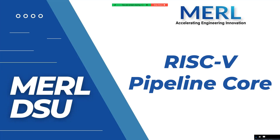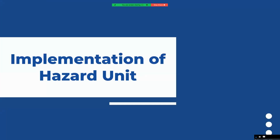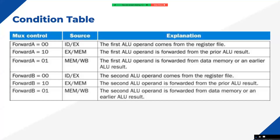Today we are going to design the first component of that forwarding logic, which is the hazard unit. The hazard unit is responsible for taking all decisions and generating the extra control signals required by the pipeline to execute operations correctly. Today's topic is the implementation of the hazard unit for our pipeline architecture.